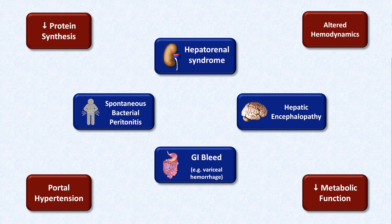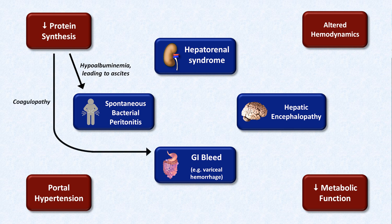Starting in the upper left, what effect does decreased protein synthesis have? Hypoalbuminemia contributes to the development of ascites, which places a patient at risk from SBP, and decreased production of coagulation factors increases the risk of developing a GI bleed.